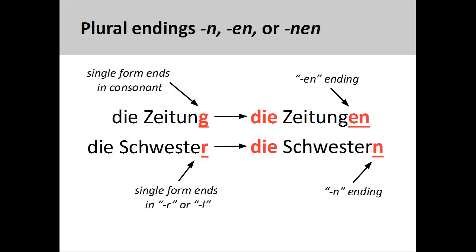The fourth group consists of nouns that add -n or -en for a plural ending. The nouns in this group are mostly all feminine. If the noun ends in a consonant such as Zeitung, newspaper, then -en is added. However, if the consonant is either L or R, such as Schwester, sister, then only -n is added, Schwestern.